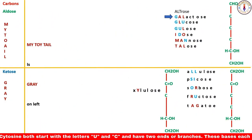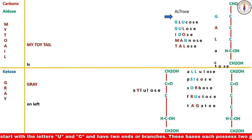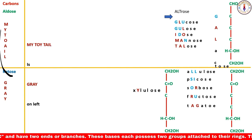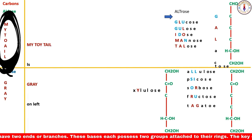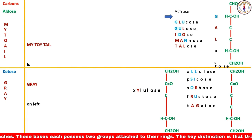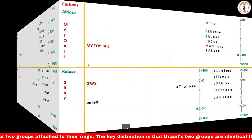Now let's come to hexoses. Write galactose vertically starting from carbon number two — three carbons need OH drawn, so letters G, A, and L are important. G does not belong to the set 'my toy tail,' so OH will be on the right side there. A and L both belong to the set, so OH will be on the left side on those carbons. Apply the same rules to the rest of the hexoses.